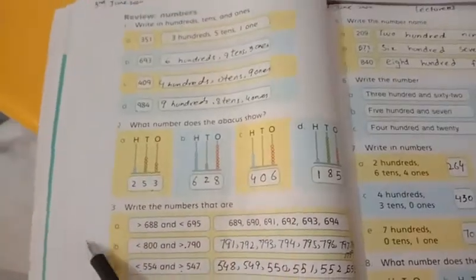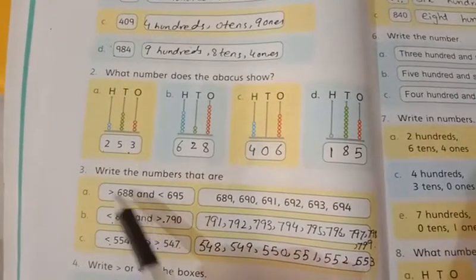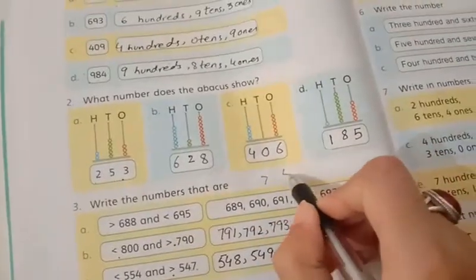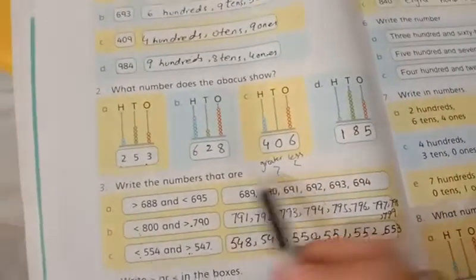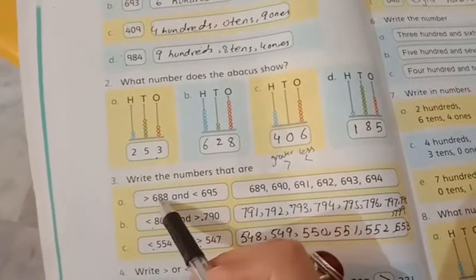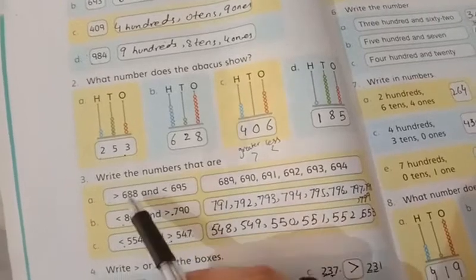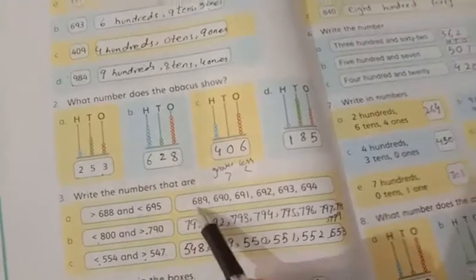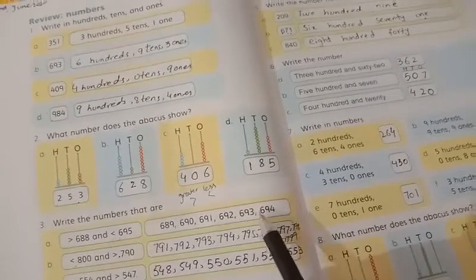We have to write this in 10s and 10s. Now, the number of ride numbers is 688. Greater than 688, this symbol is greater than 688. Now this is greater than 688 and 695 is less than 688. The number of 688 will not count itself. The number greater than 688: 690, 691, 692, 693, 694.